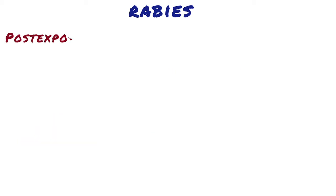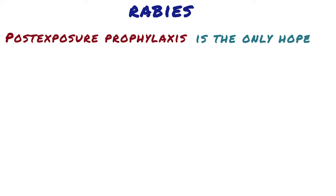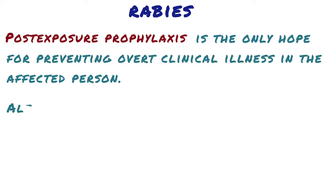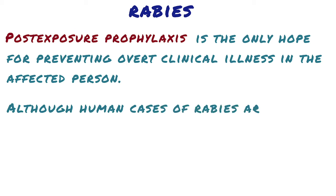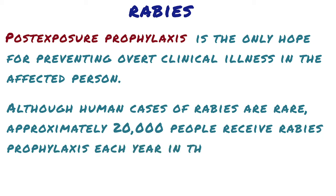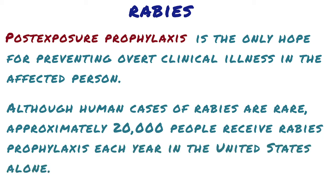Post-exposure prophylaxis is the only hope for preventing overt clinical illness in the affected person. Although human cases of rabies are rare, approximately 20,000 people receive rabies prophylaxis each year in the United States alone. Prophylaxis should be initiated for anyone exposed by bite or by contamination of an open wound or mucous membrane to the saliva or brain tissue of an animal suspected to be infected with the virus, unless the animal is tested and shown not to be rabid.